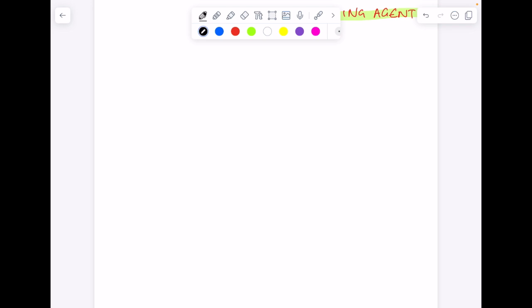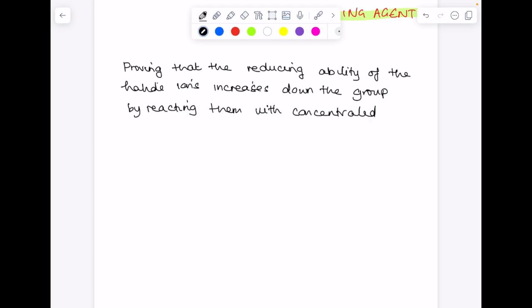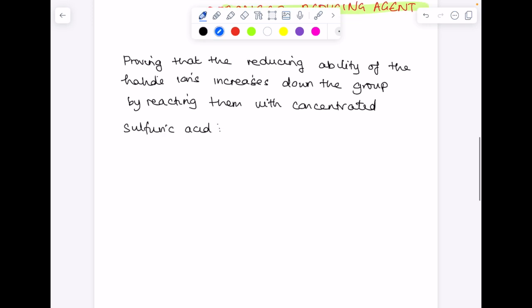And now let's talk about observations. So how do we observe or how can we see that the reducing ability of the halide ions increases down the group? We react those solid sodium halides with concentrated sulfuric acid. Bear in mind that we can prove that the halide ions reducing power increases if we look at the various equations involved and we consider sulfur's oxidation number. Because the greater that decrease in oxidation number of sulfur, the greater the halide's reducing power.